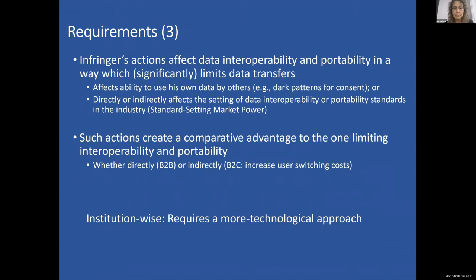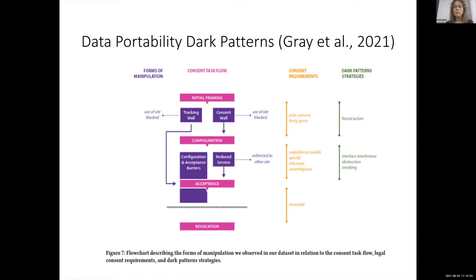The fifth element is that the infringer's actions affect data interoperability and portability in a way which significantly limits data transfers — affecting the ability of others to use the infringer's own data. It might be through dark patterns for consent. This is an interesting example of the kinds of dark patterns that firms use in order to limit consent which is mandated by law.